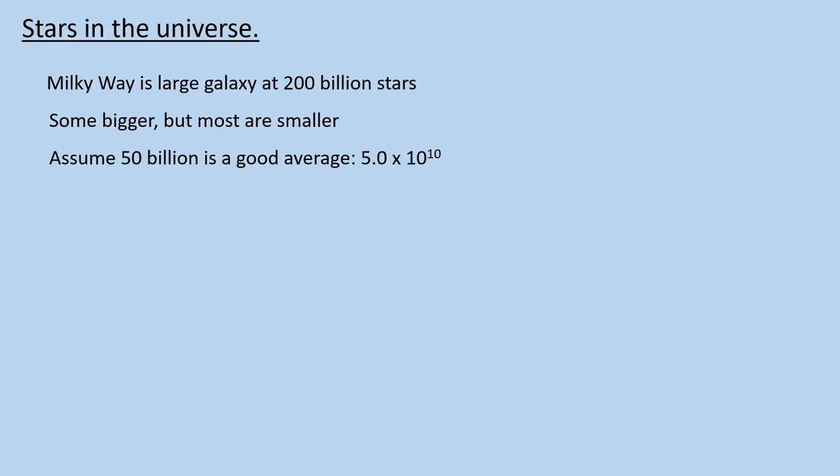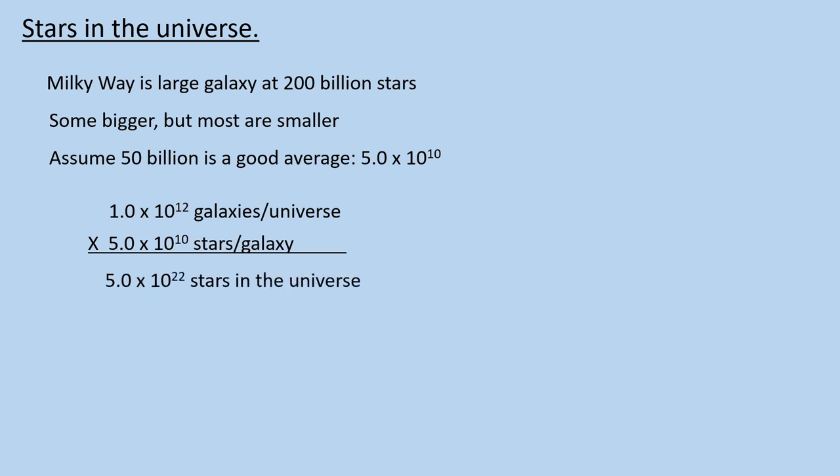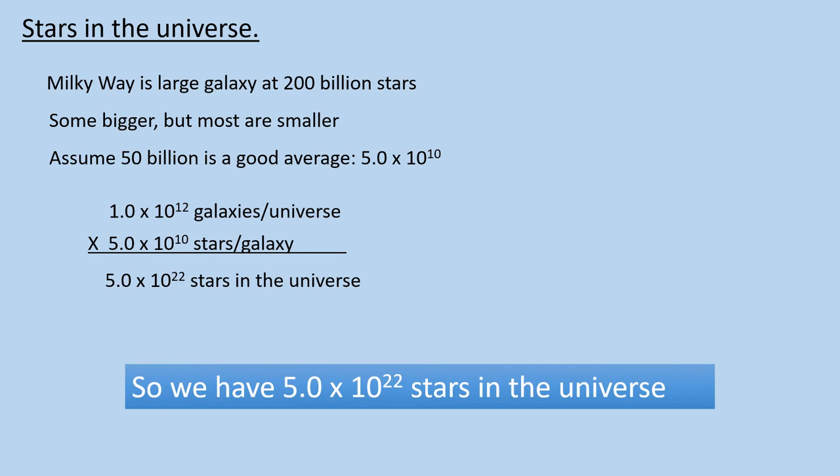We know galaxies come in various shapes and sizes, with some larger, but most smaller, than the Milky Way. So, let's make one last assumption. If a large galaxy has some 200 billion stars, let's assume that a reasonable average for the number of stars in all galaxies is 50 billion. We could use several higher-level astronomical tools, like stellar mass function, to get a more accurate quantity, but those are beyond the scope of this presentation. So, calculating the number of galaxies times our average number of stars per galaxy yields 5.0 times 10 to the 22nd stars in the universe. That's a pretty big number. A 5 followed by 22 zeros.